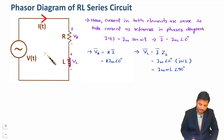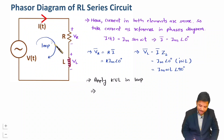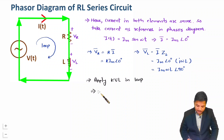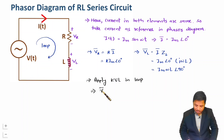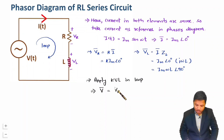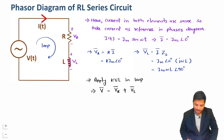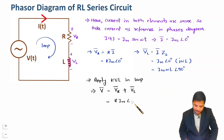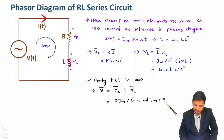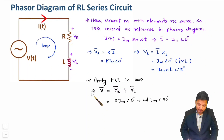Since we have an RL circuit in series, we can apply KVL in this loop. Applying KVL, voltage source V in phasor form equals voltage across resistance VR in phasor form plus voltage across inductance VL in phasor form. So VR = R·Im∠0° and VL = ωL·Im∠90°.